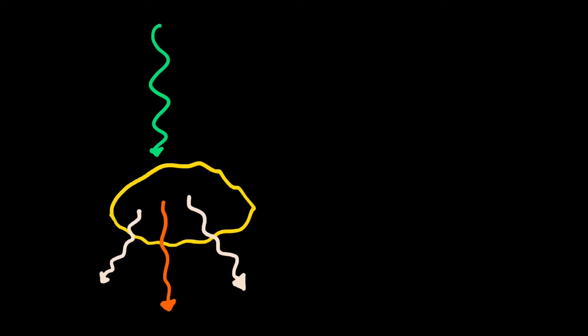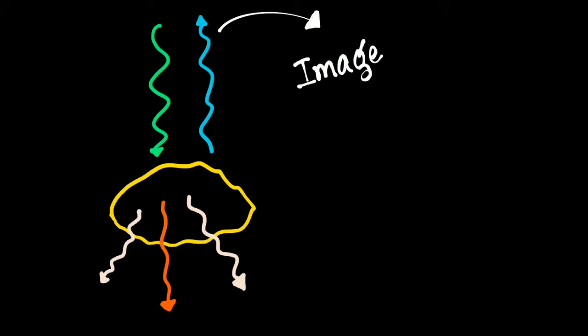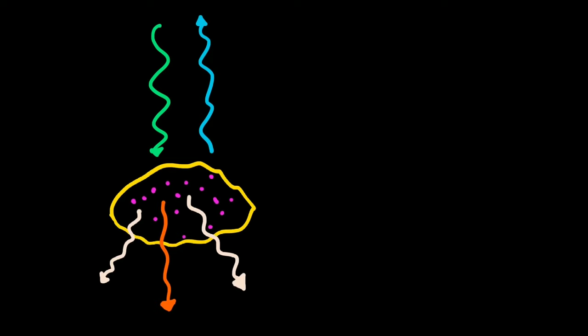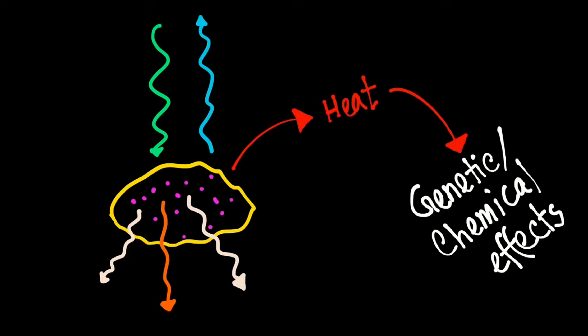We transmit sound waves through the patient's body. When this sound wave comes in contact with body tissue, some events happen. Some waves pass through the tissue. Some get refracted, meaning they change direction. Some get reflected — we call them echoes — and convert them into an image. Some sound waves get absorbed by the body tissue; this is what we are worried about. Energy can change its state, so when the sound waves get absorbed, they are converted into heat. This heat can cause some genetic or chemical effects inside the body.